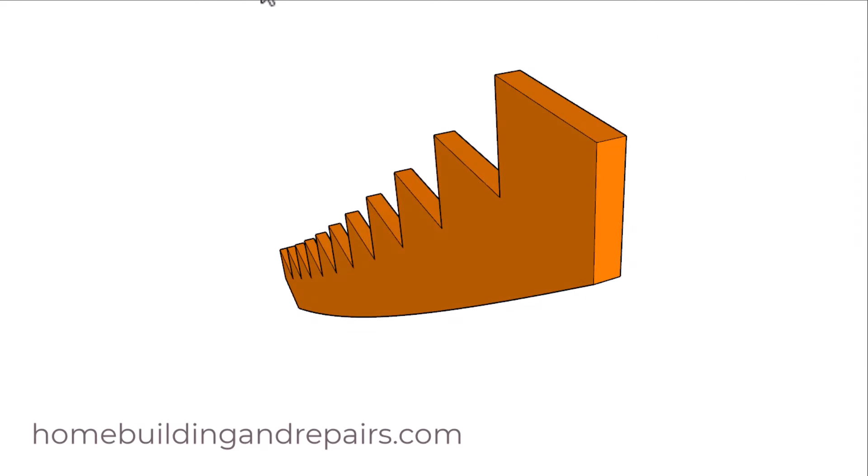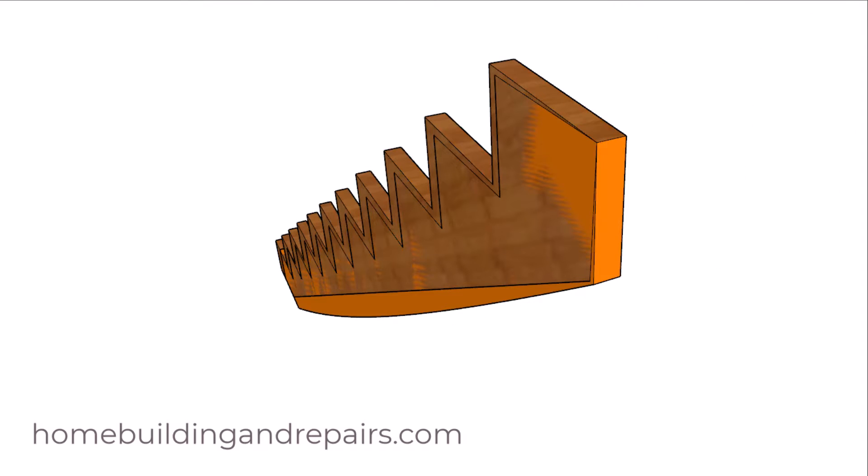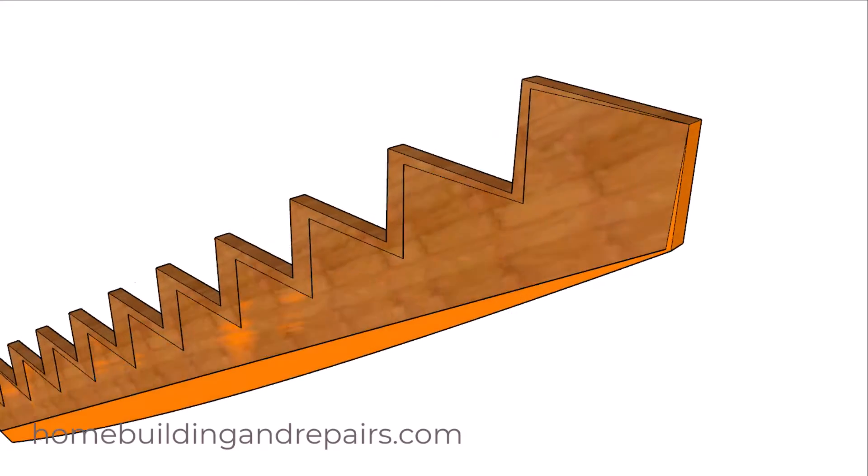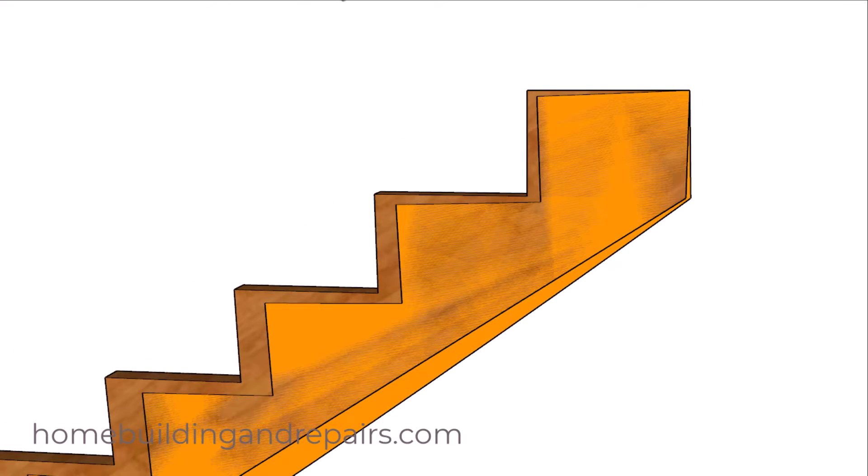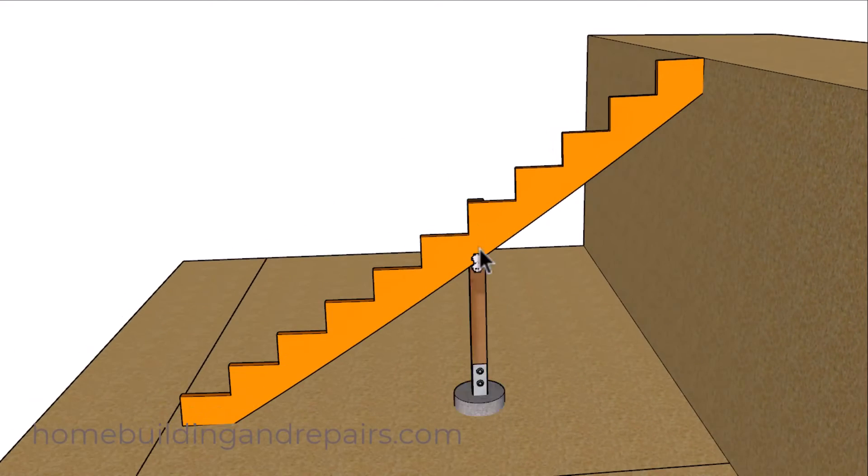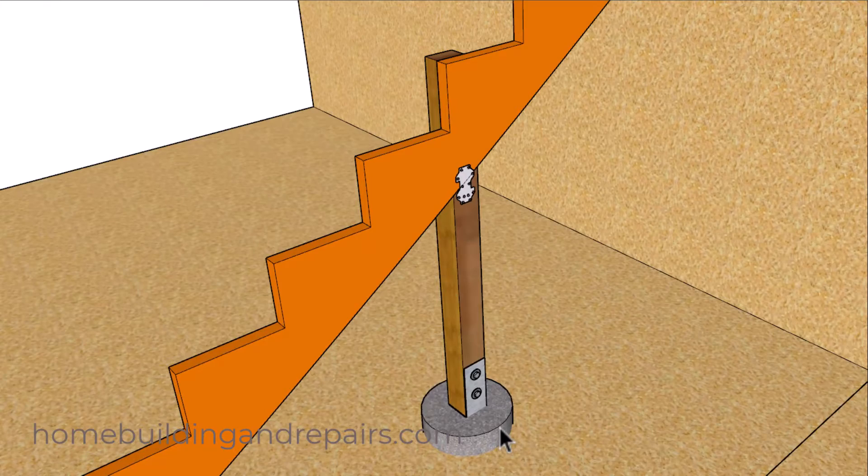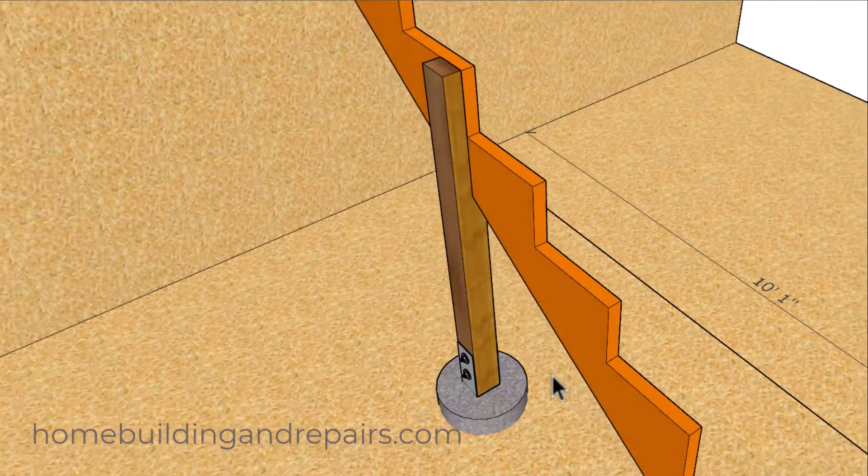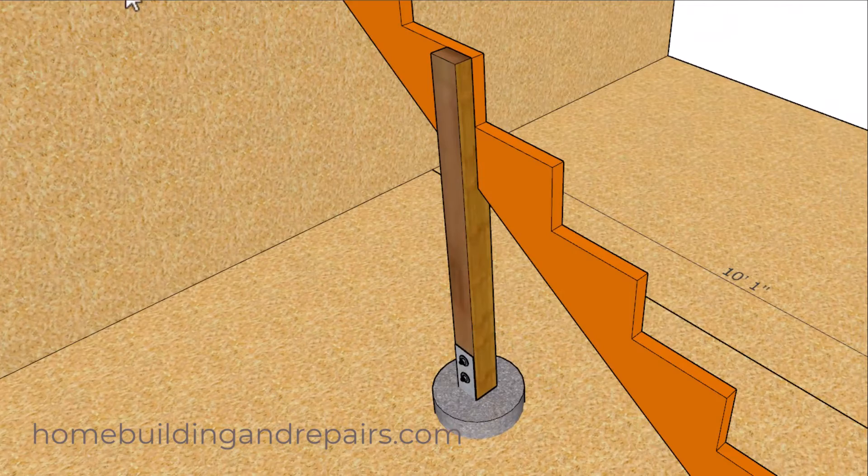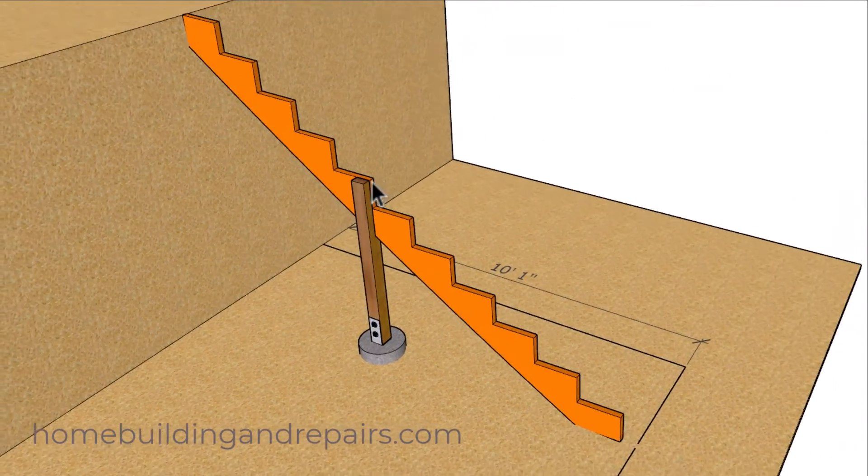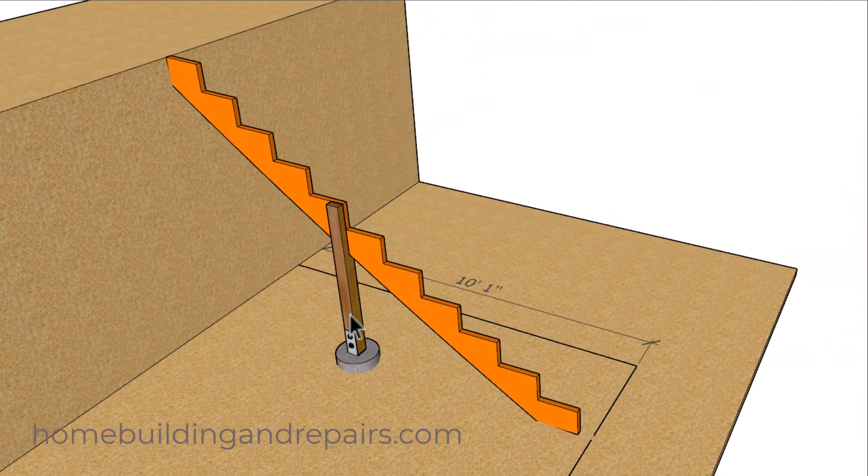So again, we have a sagging stair stringer that would be difficult to raise into its original position. Some sagging stair stringers will simply require you to add a structural support like this one here after the stair stringer has been repositioned. And something like this might also require a structural footing or even a wall if you can build it instead of using an individual post and footing for each one of the stair stringers.